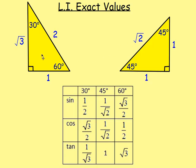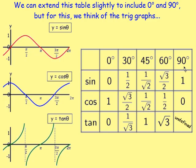After that, we were introduced to the exact value triangles. We found that these two triangles let you work out the exact values of sine, cos, and tan of 30, 45, and 60. You can also extend this to include 0 and 90, but for those you will need to use the graphs, because every 90 degrees the answer is going to be either 1, 0, or negative 1. Just look out for the tan graph, because at 90 degrees, or π over 2, it would be undefined.